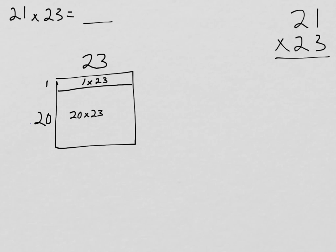20 times 23 isn't totally easy, but we've been practicing strategies to help us solve it. And then what we would do to find the larger rectangle — we would add these back together to make it 23 times 21 again. So if we take these one at a time: 1 times 23 is straightforward. That's 23. One group of 23 is 23. I'm going to use mental math here. 20 times 23 is going to be the same as 2 times 23 times 10. So 2 times 23 is 46, and 46 times 10 is 460.